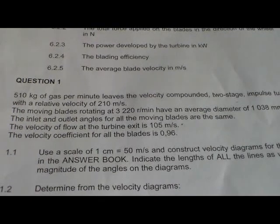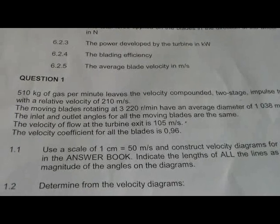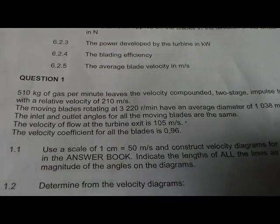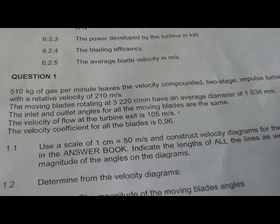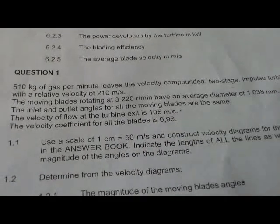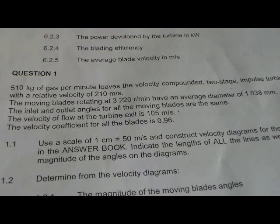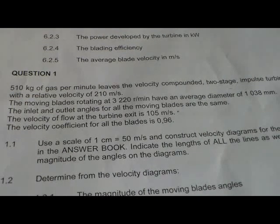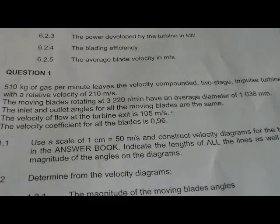Today we're going to look at the velocity diagram for two stages. We're still on those two stages. I'm just going to do these two questions here, and I'm not going to do them up to scale. I'll just indicate how to draw these two stages and to understand the language that they're speaking here. We have 510 kilograms of gas per minute, a two-stage impulse turbine.